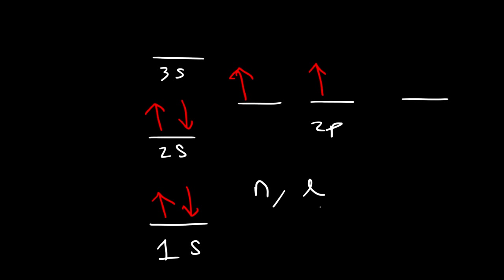And then you have ml, the magnetic quantum number, which describes the orientation of the orbitals with respect to another orbital. And finally, ms, the electron spin.